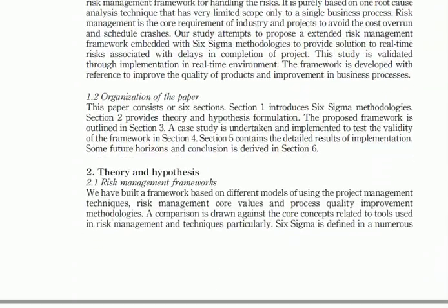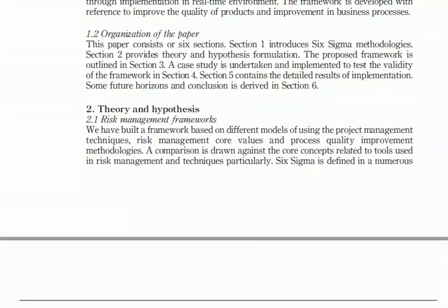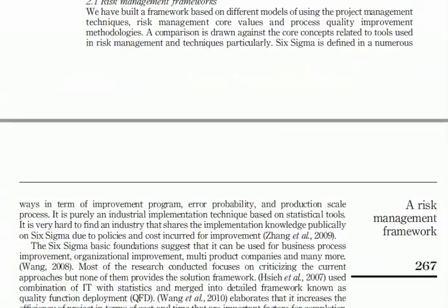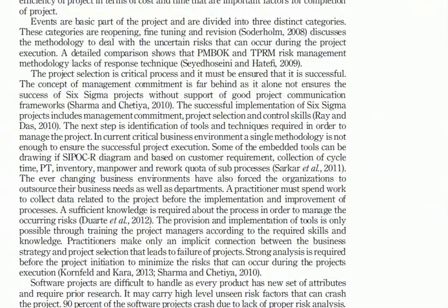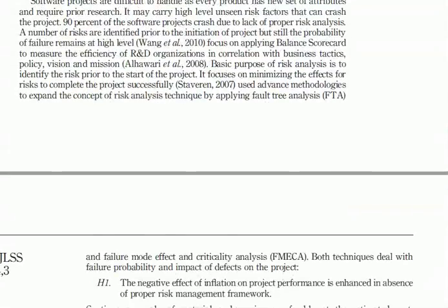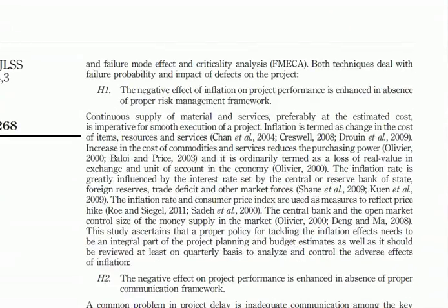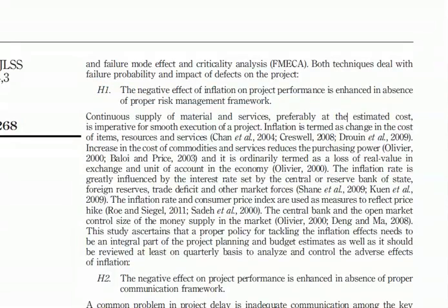The second part in every research is theory and hypothesis. In some journals there is a questionnaire portion or hypothesis portion where you define your basic hypothesis, your research problem, your research scope, and related details. This portion can have further details. For example, one hypothesis here states: 'The negative effect of inflation on project performance is enhanced in the absence of a proper risk management framework.' You can define multiple hypotheses and add different kinds of details accordingly.